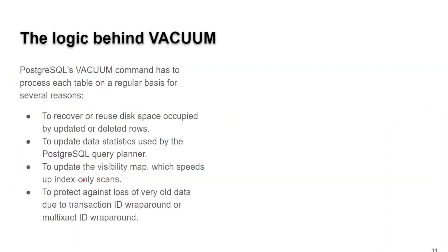The logic behind vacuum is kind of interesting. We can recover disk space and reuse that disk space. We can also update the data statistics — this is kind of like analyze table in the MySQL world, and there is an analyze command in Postgres as well. It's also going to update the visibility map, which speeds up index-only scans appreciably. And it also prevents against the ultimate nightmare for a lot of Postgres DBAs: transaction wraparound.